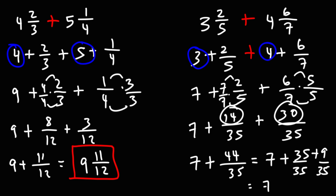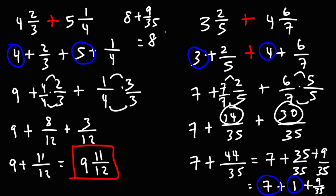35 divided by 35 is 1. And 7 plus 1, when we add them, we get 8. So what we have now is 8 plus 9 over 35, which we can leave as a mixed number: 8 and 9 over 35.